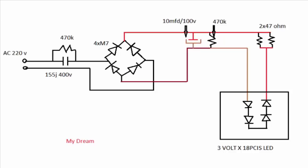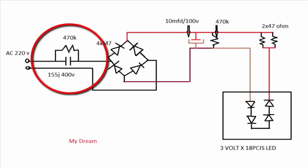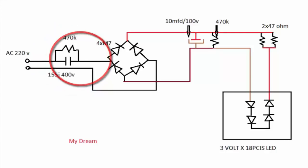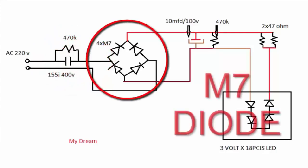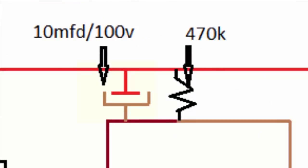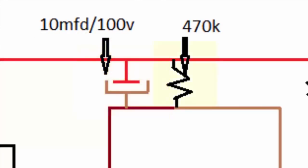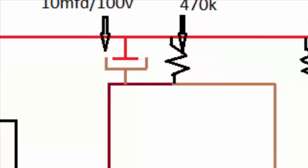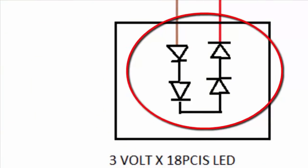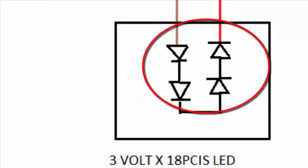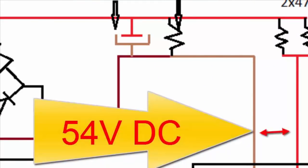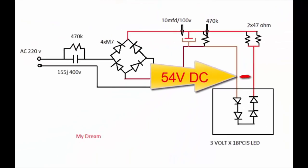Here you can see a diagram. In the inner circle there is a 470K resistance and a 155J 400V capacitor, both parallelly connected, and 4 rectifier diodes. In the yellow patch you can see a 10MFD 100V capacitor and a 470K resistance. There are 18 LED bulbs all connected in series at 3V each, and from the circuit we get 54V of DC.